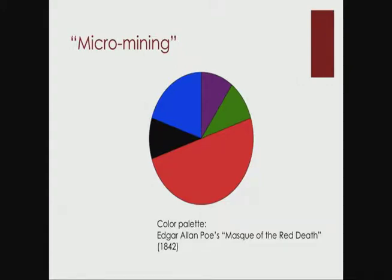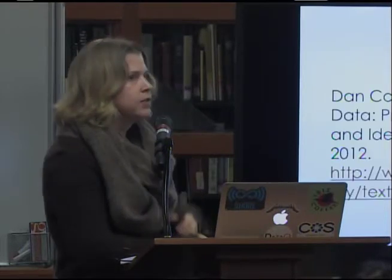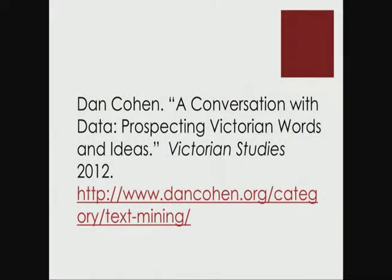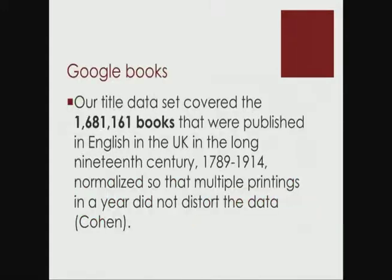I wanted to share a much larger, grander scale example of text mining. This is from a project by Dan Cohen — as a Victorianist, he wanted to question long-held assumptions about Victorian culture. He worked in cooperation with Google Books using their Ngram technology, working with over 1.6 million texts. He looked at the titles of texts during the long 19th century to question the assumed crisis of faith during that period — the idea that texts like On the Origin of Species caused a traceable falling off in religious faith.